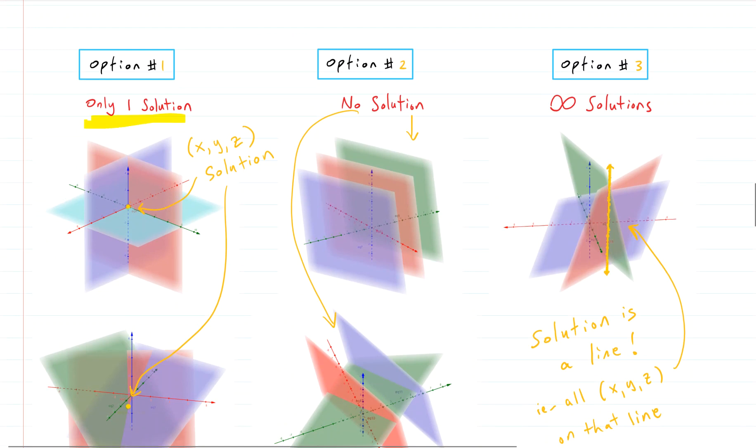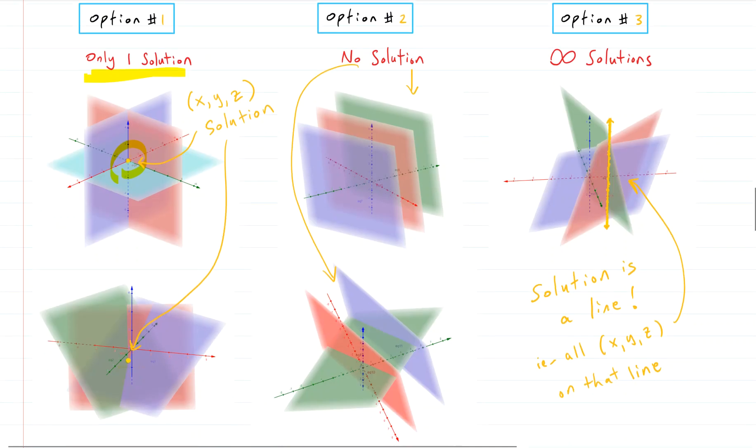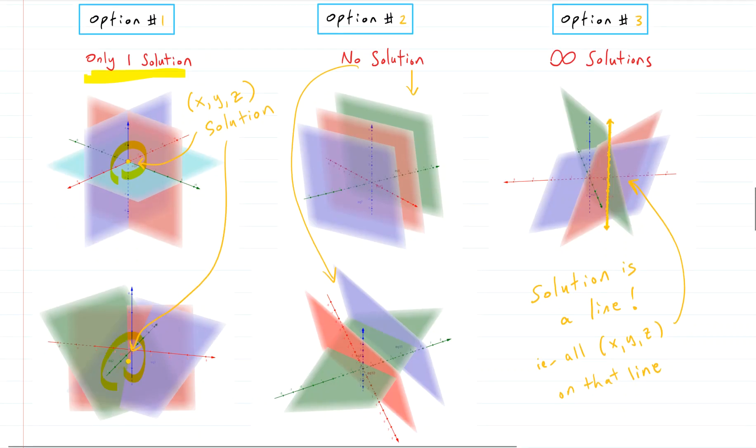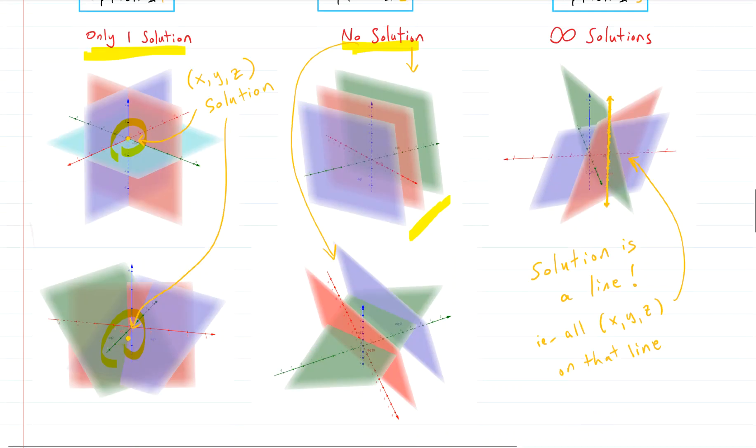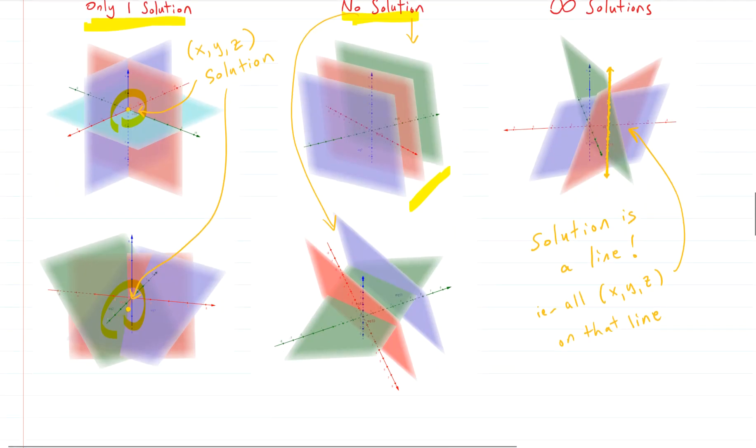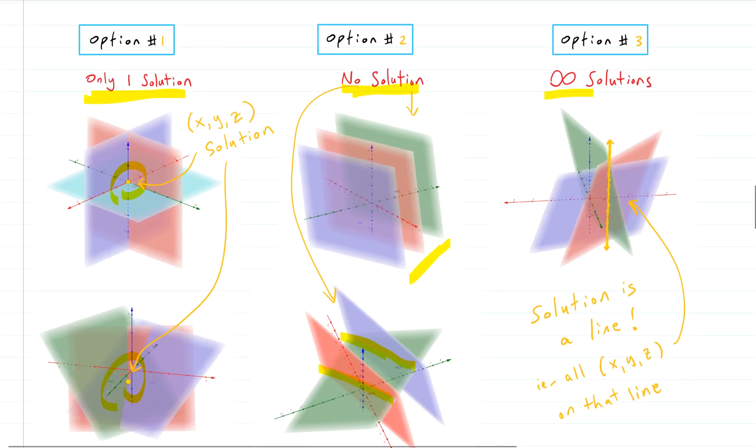So think sheets of paper in three-dimensional space. So our options are the same though. We could have one solution. The planes all just touch at one spot, as you do on the left-hand column here. We could have no solution because the planes are all parallel in the first picture, the second picture. You can see some spots where the red and green planes touch or the purple and green planes, but they don't all touch ever.